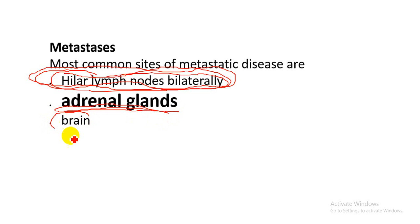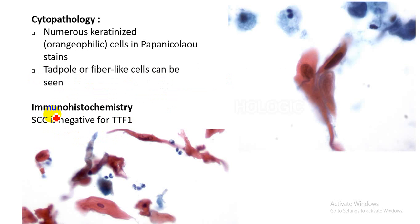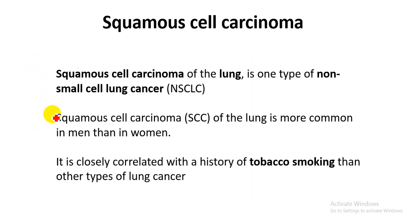Another important site of metastasis of squamous cell carcinoma of the lung is the brain, which is one of the most important sites after the adrenal gland. This was about the pathology of squamous cell carcinoma — please look for my more videos, thank you.